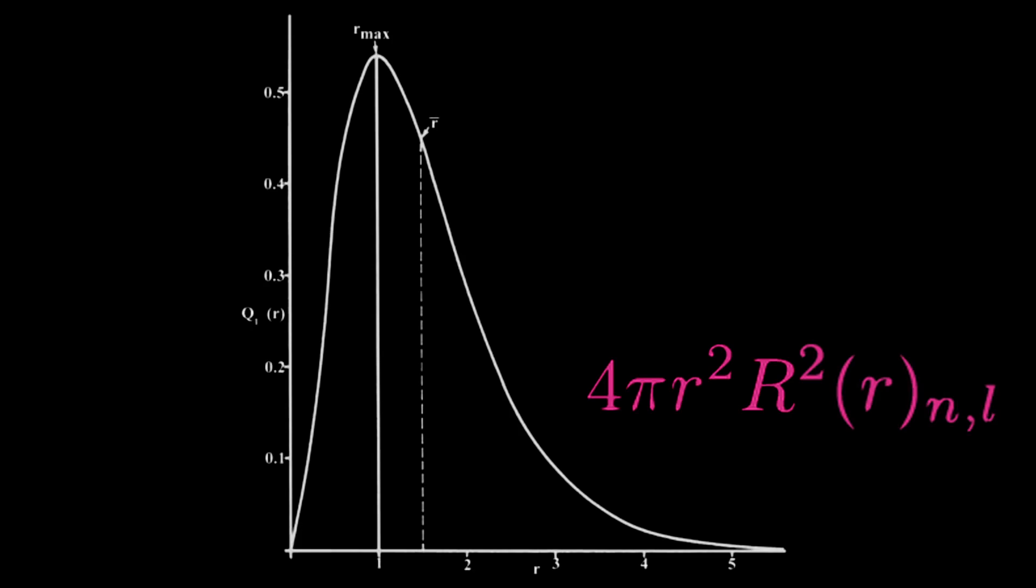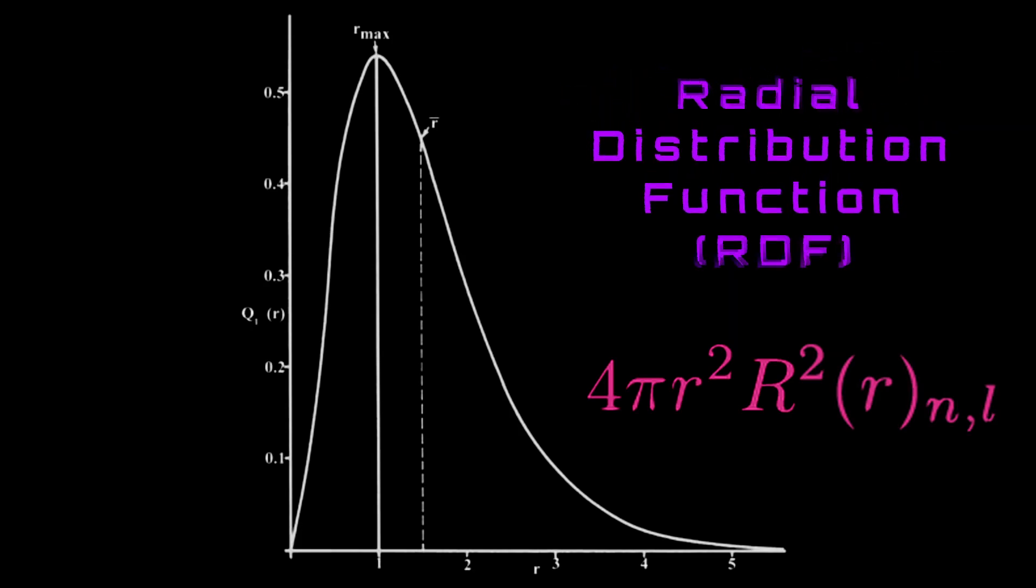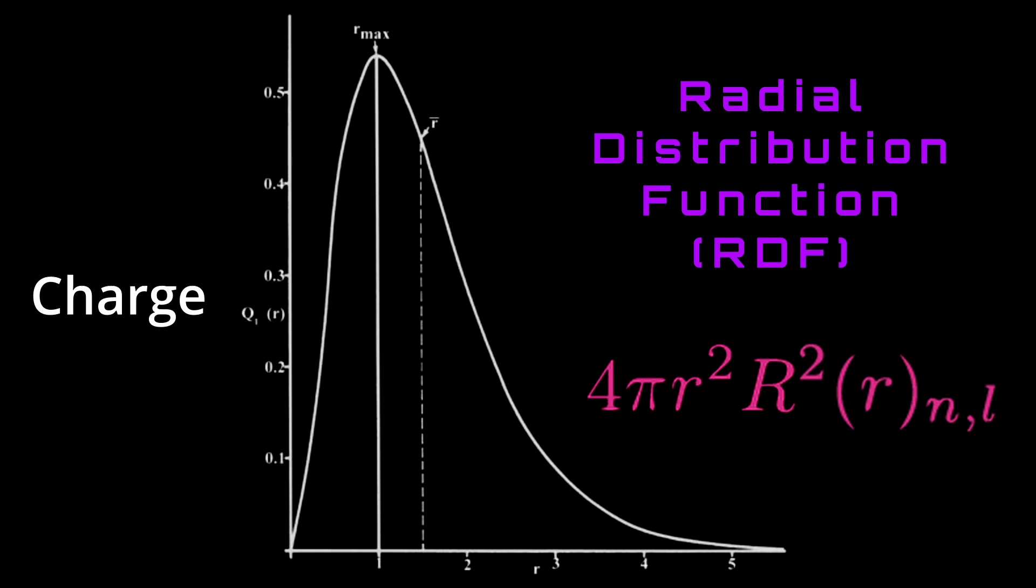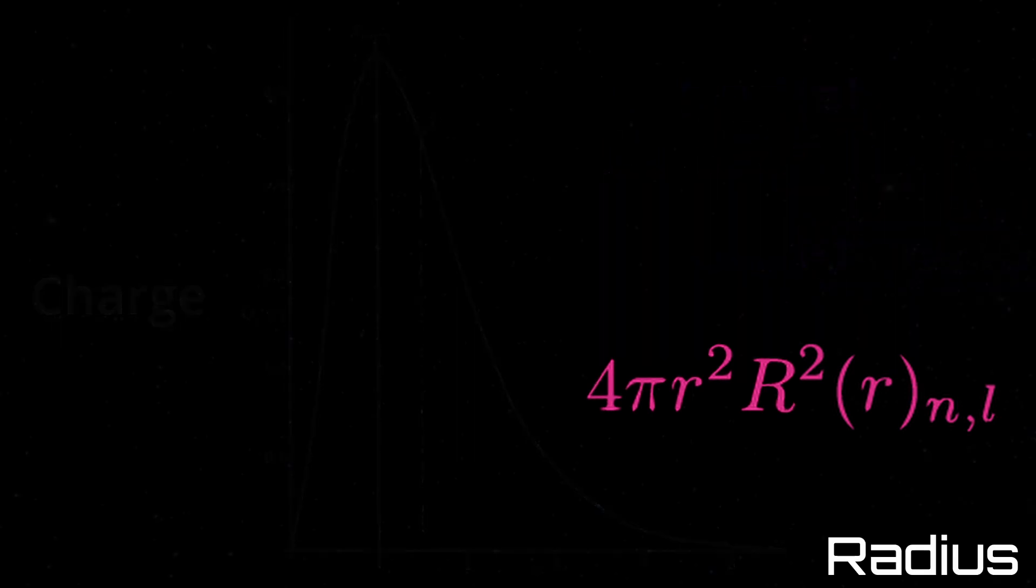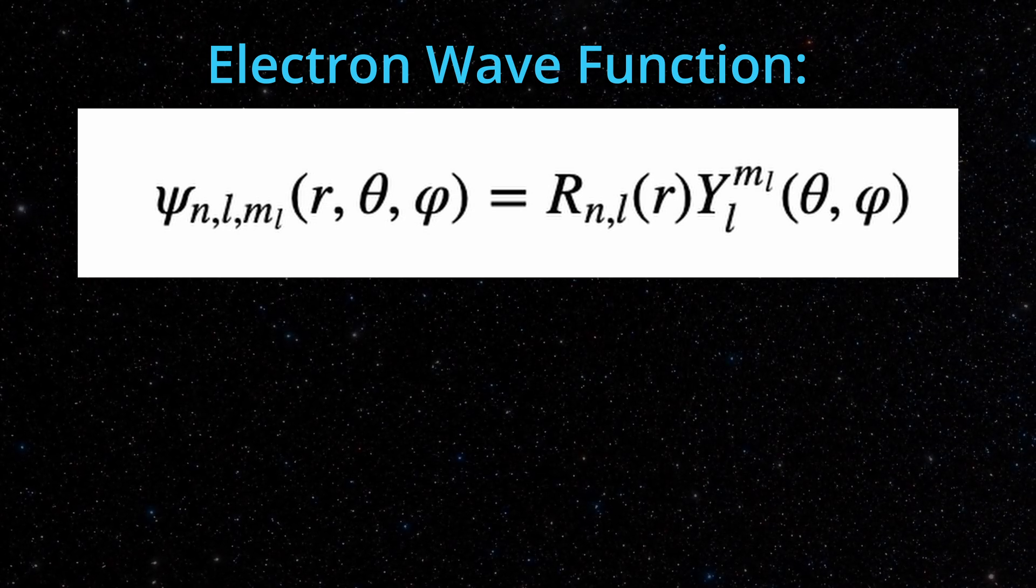This is the radial distribution function of the atom, or the RDF. It tells us charge density at a given radius from the nucleus. In other words, the function describes where the electron shell of the atom is most likely to be found.